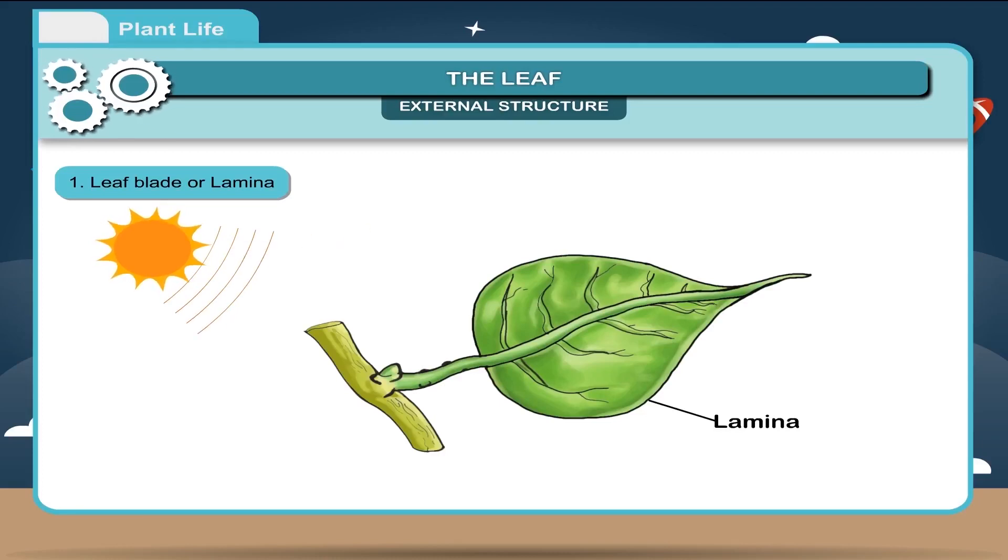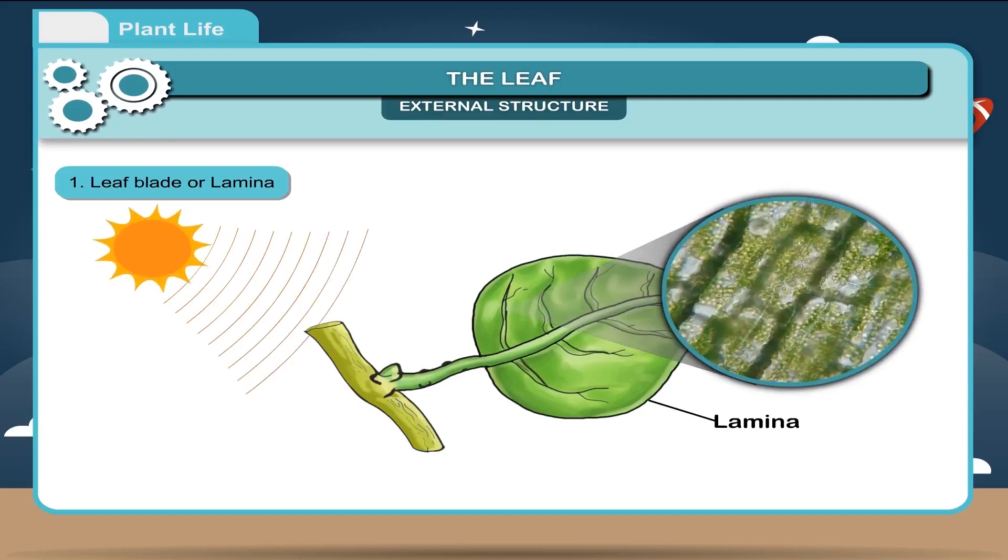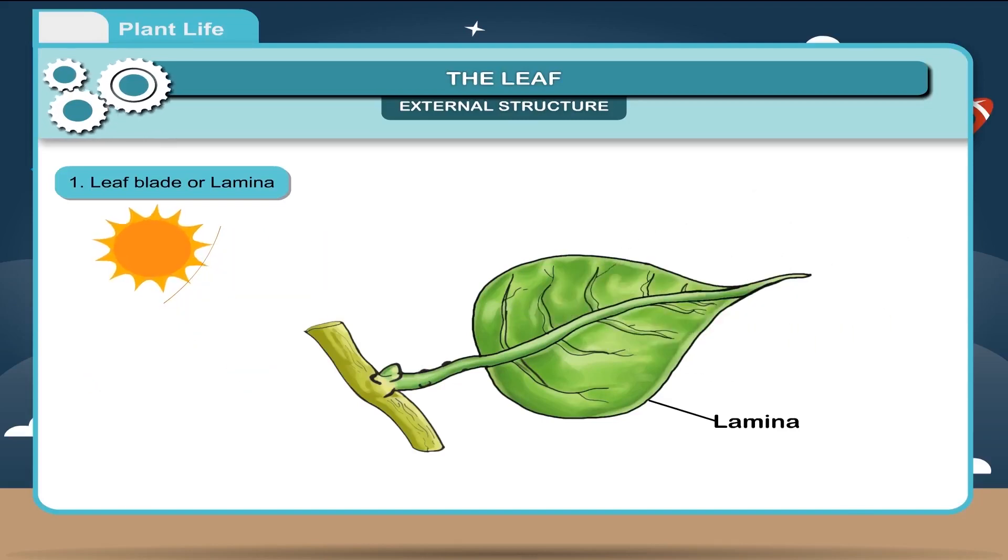It contains green pigment, the chlorophyll, which is essential for photosynthesis. The leaf blade has a network of veins which are further divided into fine veins called veinlets. Veins conduct water to the leaves and transport prepared food from the leaves to the other parts of the plant.